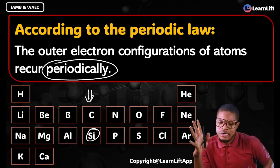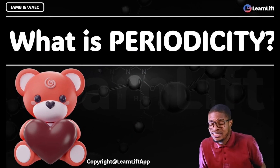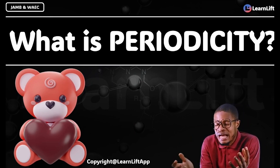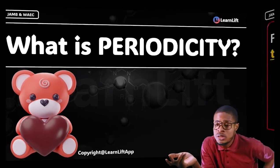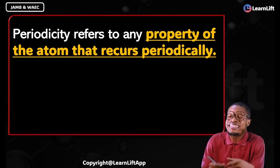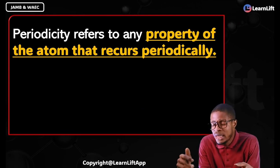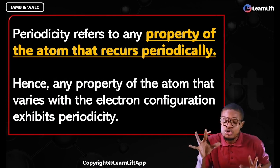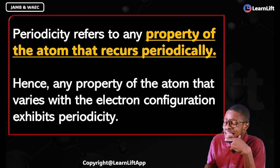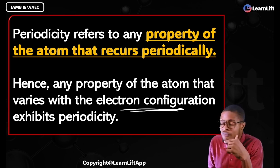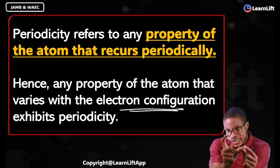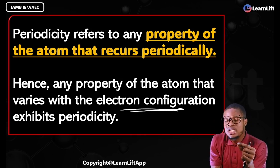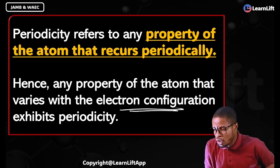Don't forget: if asked what periodicity is, it is the repetition of properties or characteristics at certain intervals along the periodic table. Periodicity also refers to the property of an atom that reoccurs periodically. Any property of an atom that varies with electron configuration and keeps showing up consistently as you move across the period — that consistency is what we call periodicity.